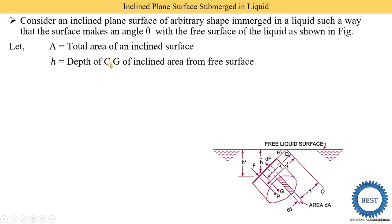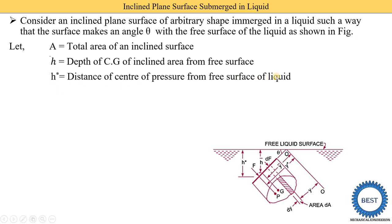H̄ is the depth of the center of gravity (CG) of the inclined area from the free surface. The G point of the inclined surface is located in the top view and extended to the front view. The height from the G point to the free surface of the liquid is called H̄. The next term is H*, which is the distance of the center of pressure from the free surface of the liquid. The center of pressure acts at point P, and from point P the height up to the free liquid surface is called H*.